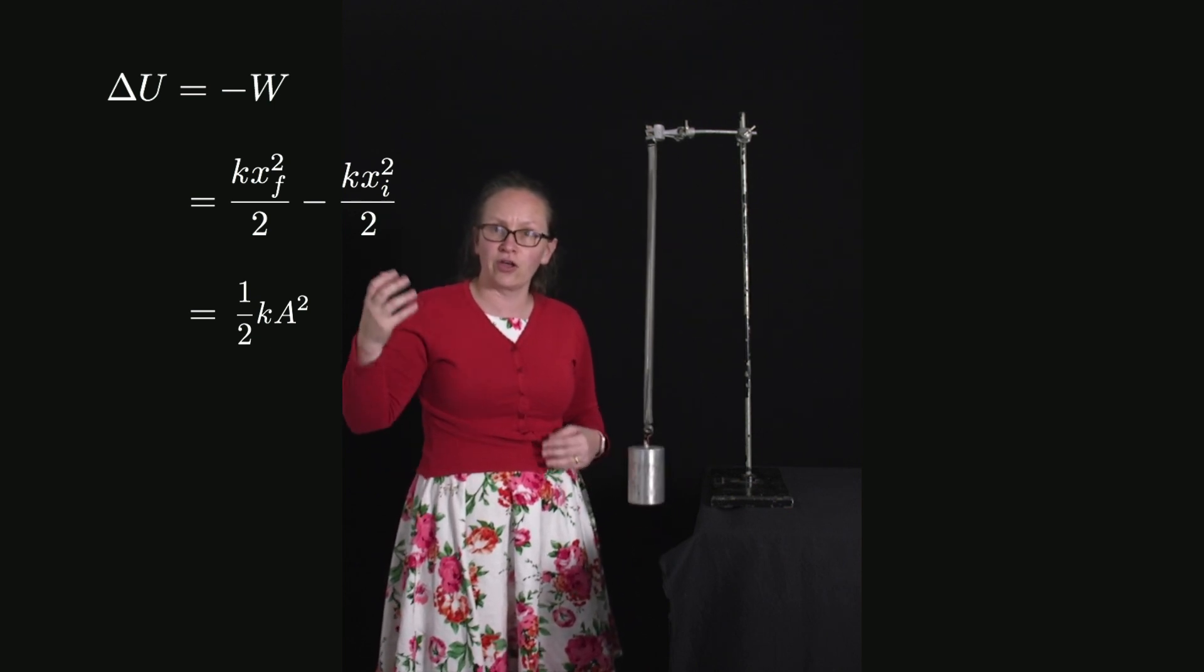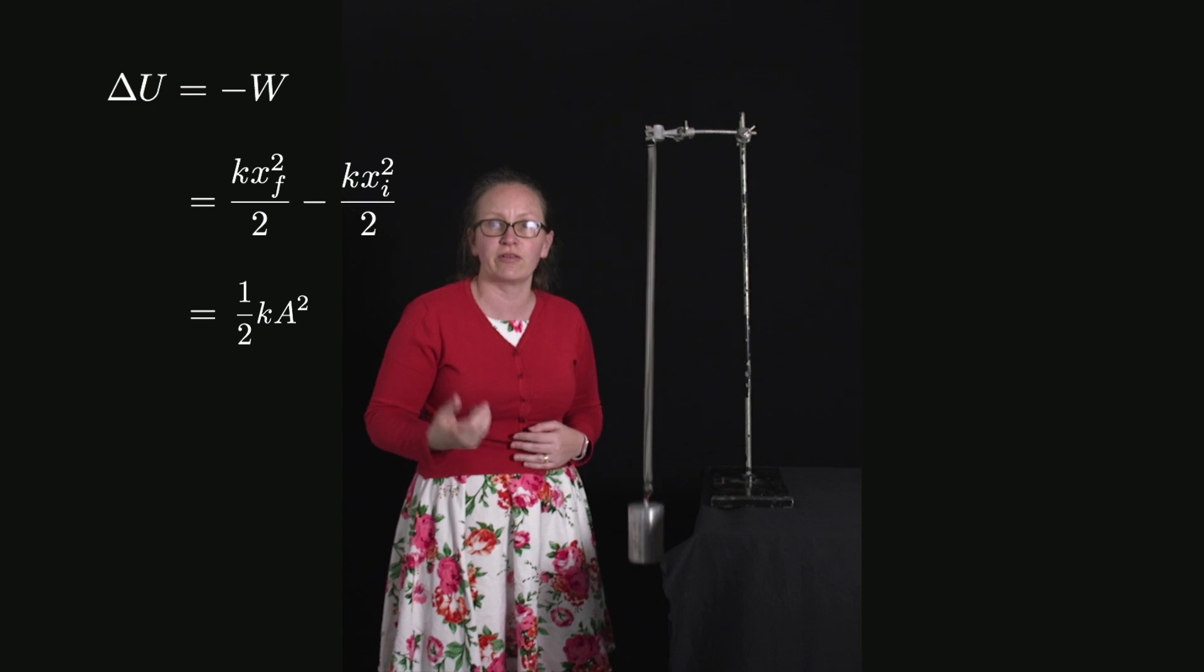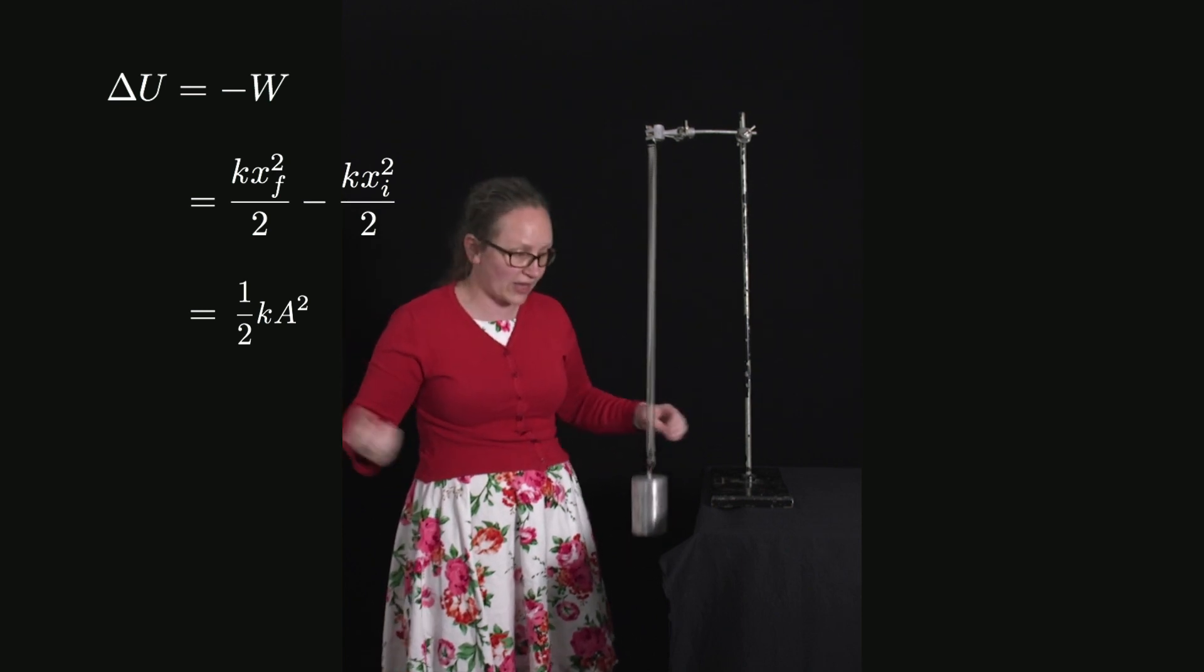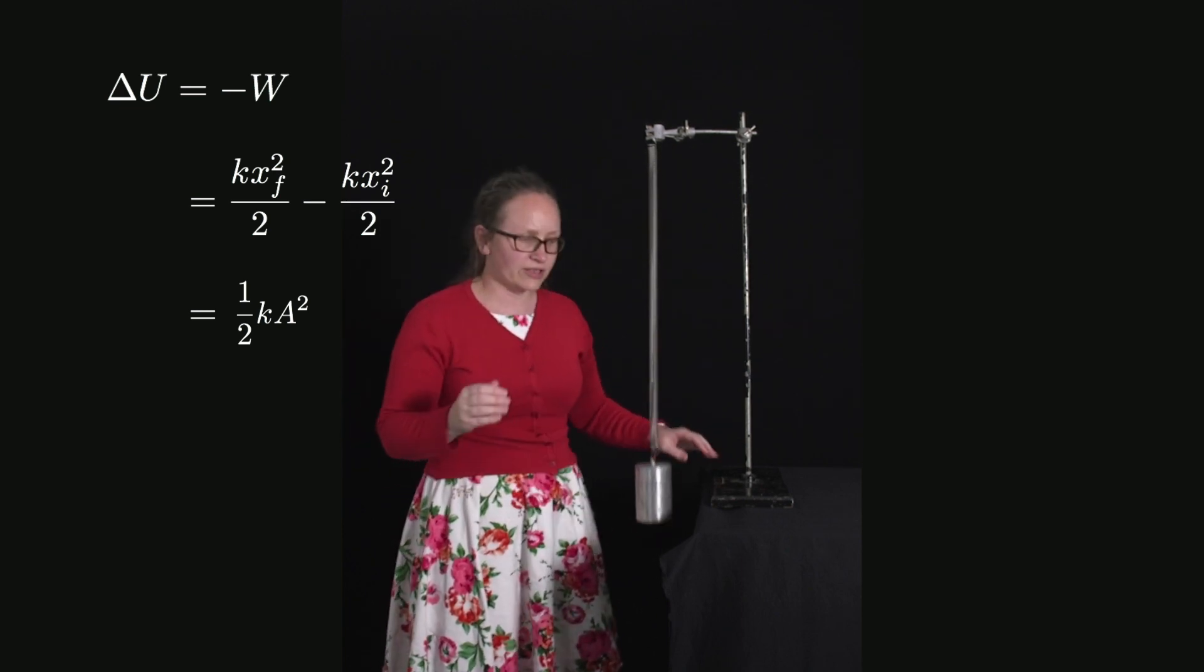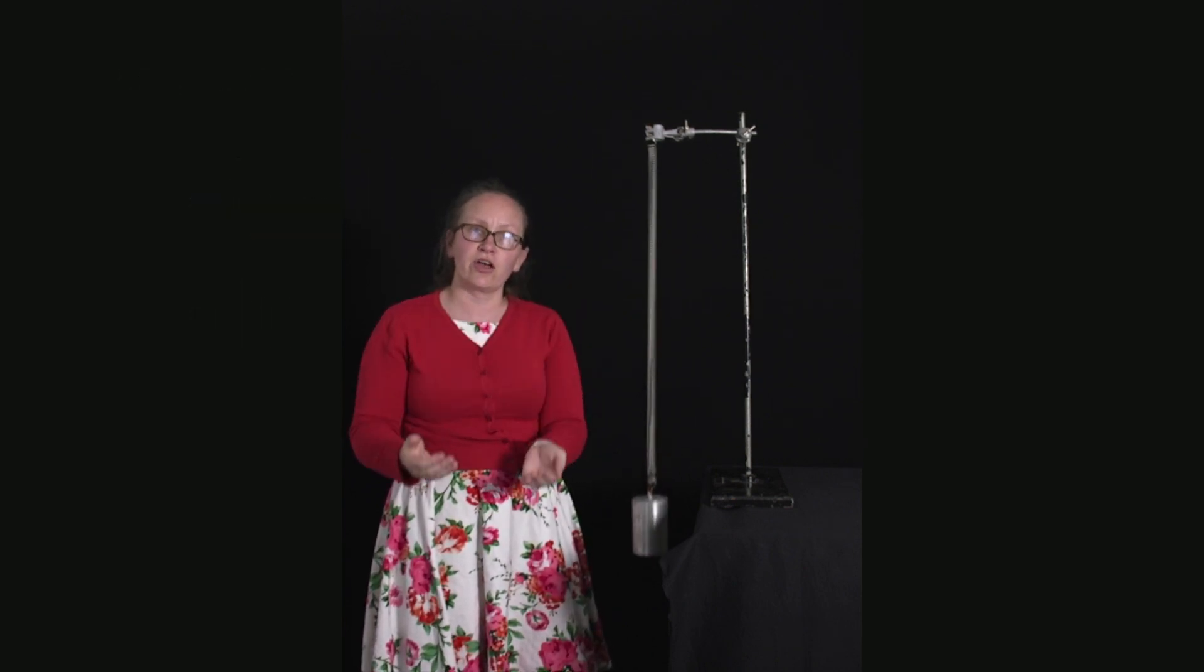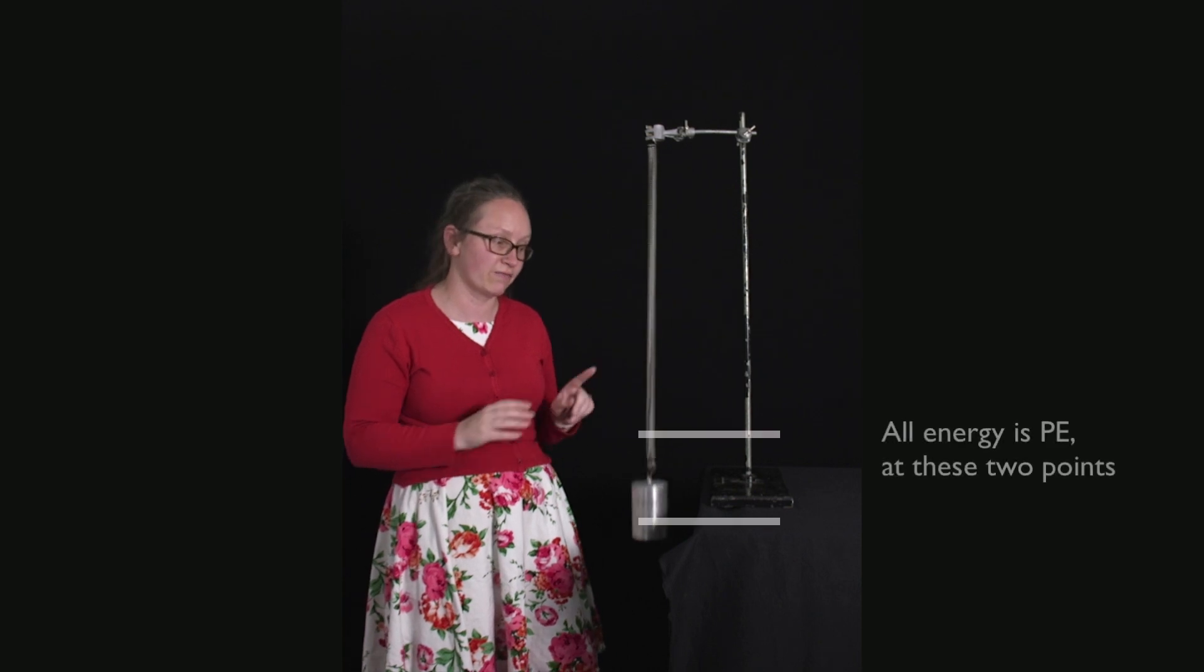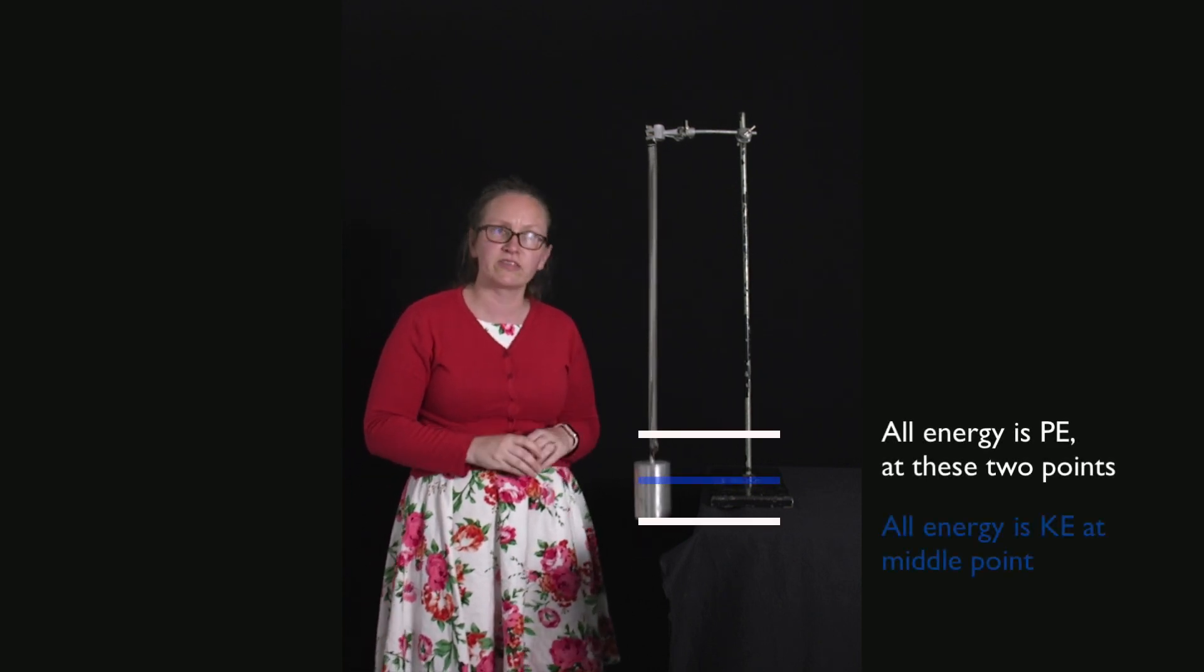So the change in potential energy is given by 1/2 k a². That energy, 1/2 k a², is conserved and just converted between different forms as the mass moves.